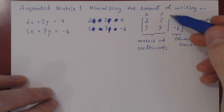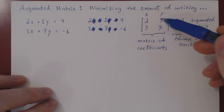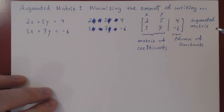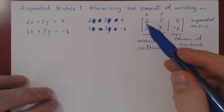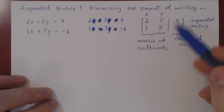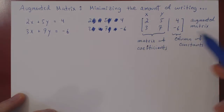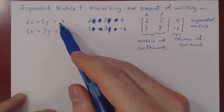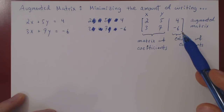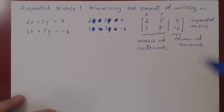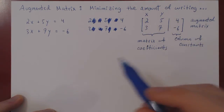By using this notation, we only write x and y on top of our augmented matrix the very first time, just to remind ourselves of which coefficients belong to which variable. That way we don't write the pluses, we don't write the equal signs, and we don't write x and y every time. We can go from the linear system to the augmented matrix: the first equation becomes the first row, and the second equation becomes the second row.